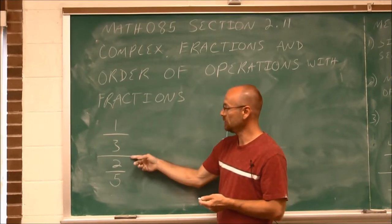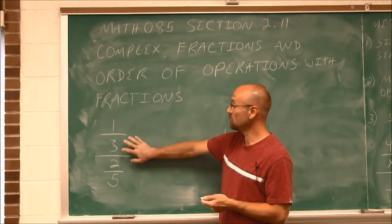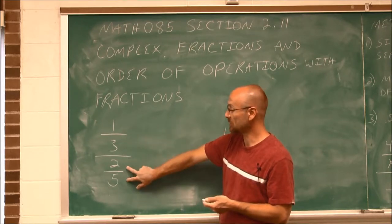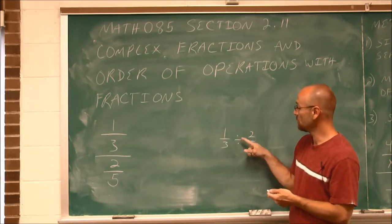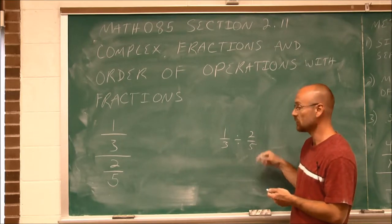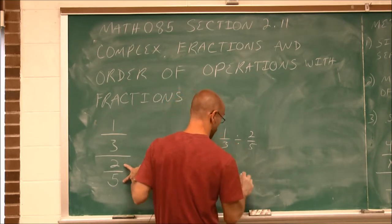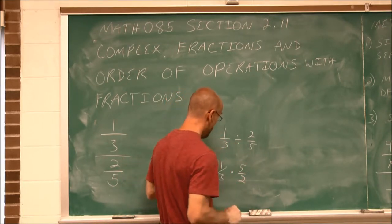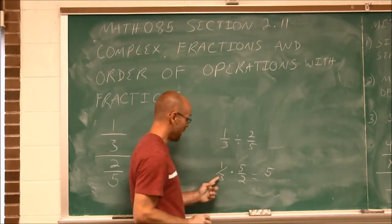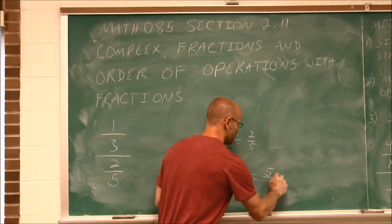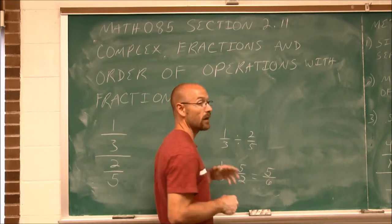We have 1/3 over 2/5, which is essentially 1/3 divided by 2/5. Since they're already single fractions, we just multiply by the reciprocal of 2/5. So we have 1/3 times 5/2. Nothing cancels here, so we just multiply the numerators: 5 times 1 is 5, and 3 times 2 in the denominator is 6. So 5/6 is the simplified version of this complex fraction.